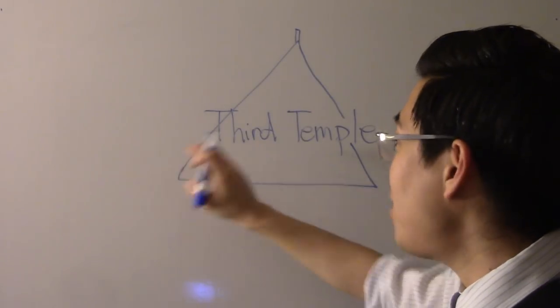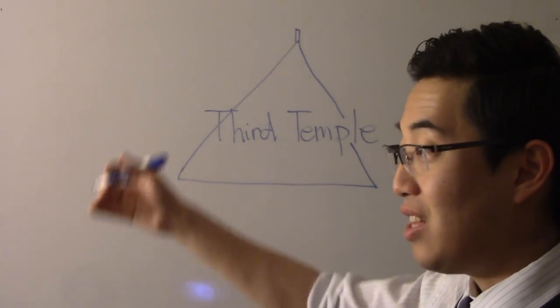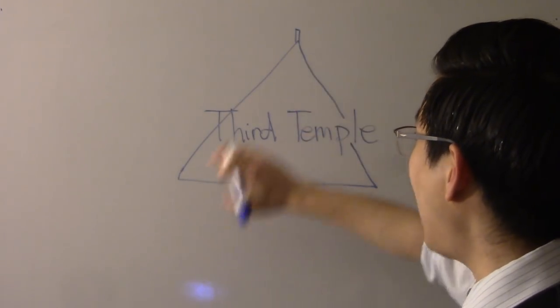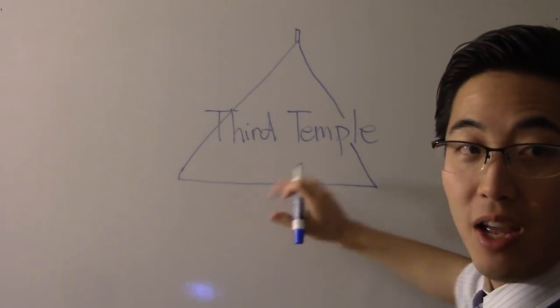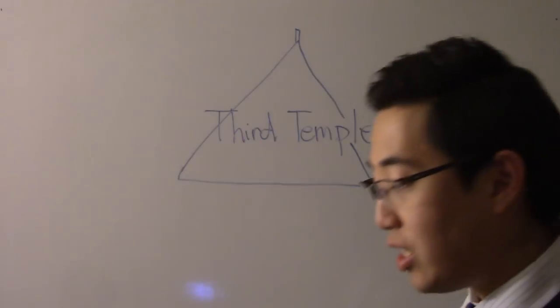So think about this. Daniel 9, when it says the sacrifices are starting and Israel's ordinance is running, all you need is that similar tabernacle tent set up and then you can start running it. You don't need to complete the building.